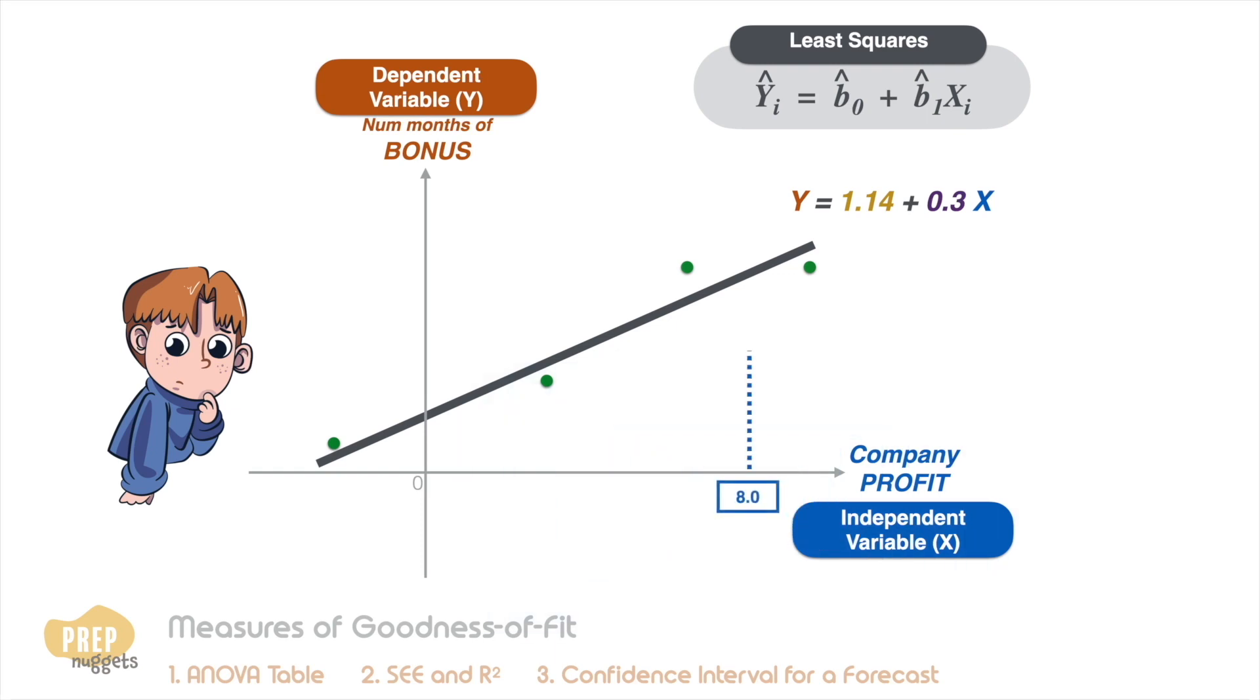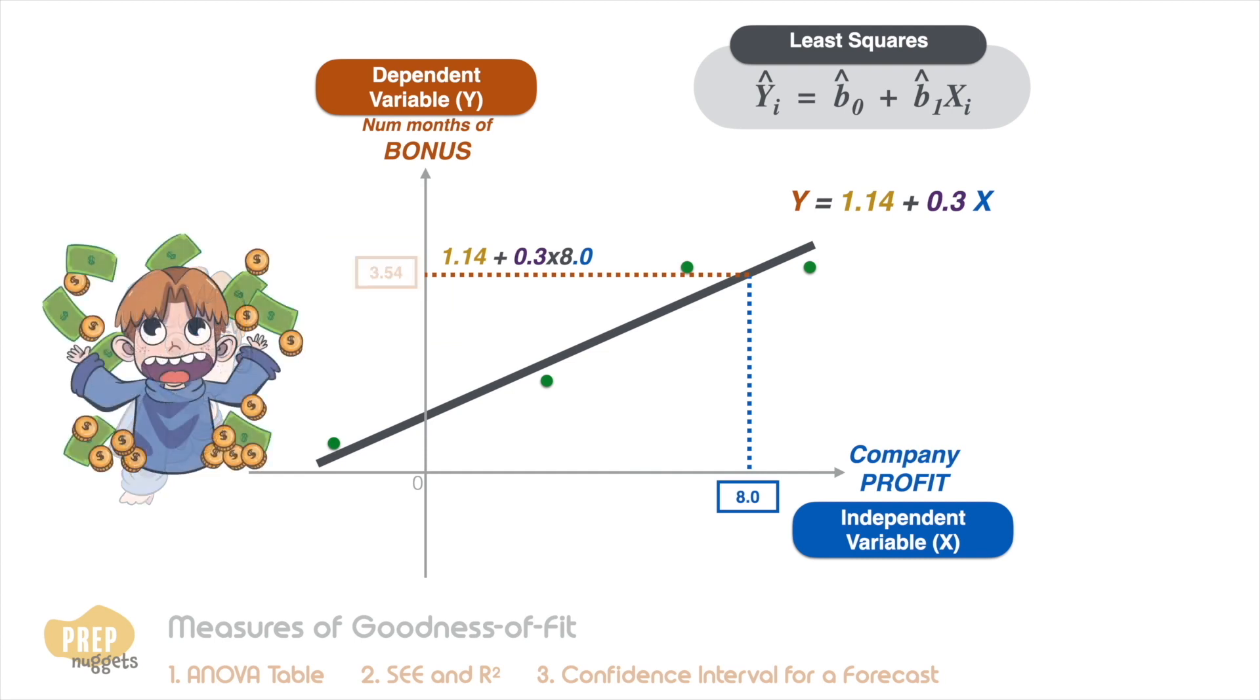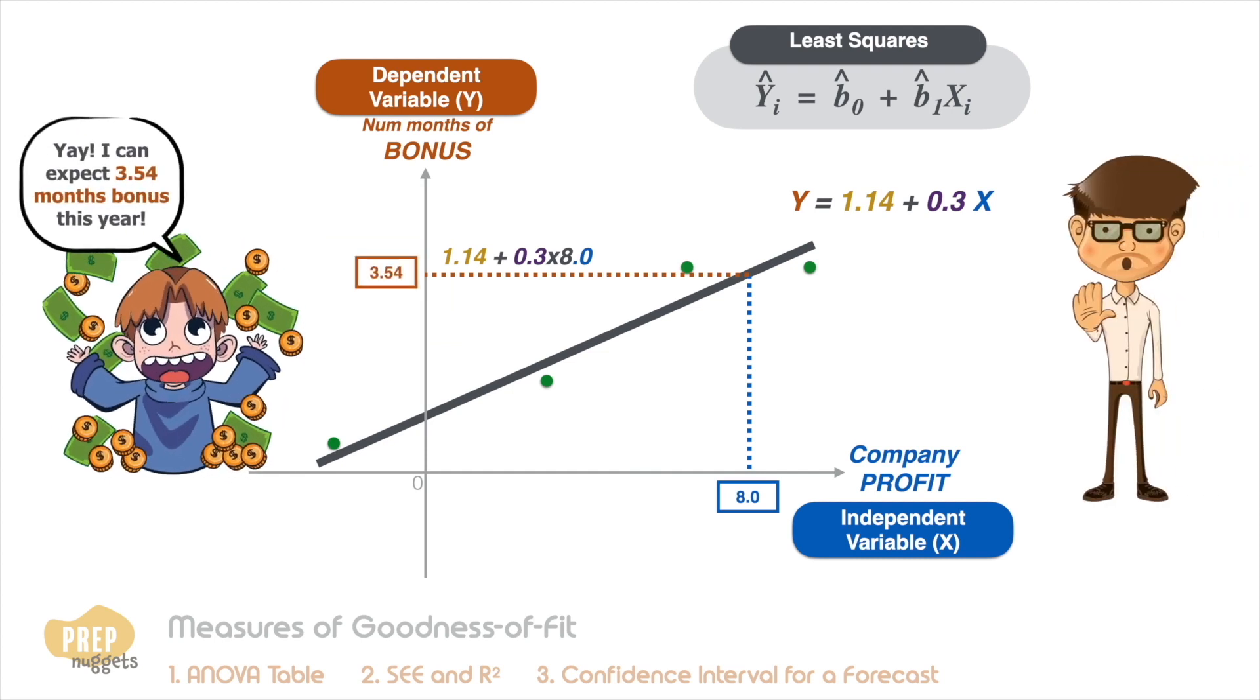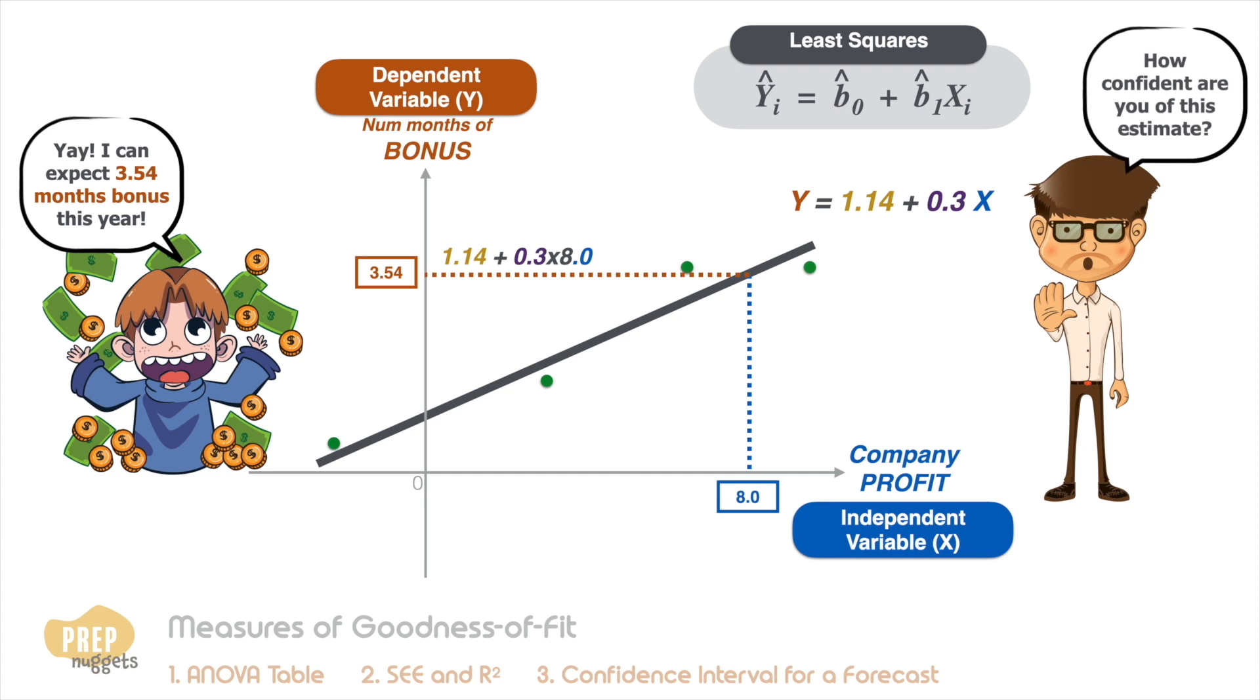Based on this, you learned that you can expect 3.54 months of bonus if your company makes $8 million profit for this year. So how confident are you of this estimate?